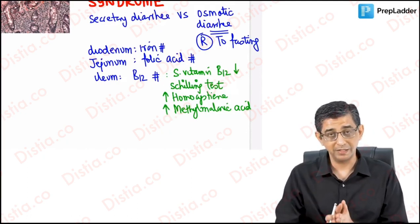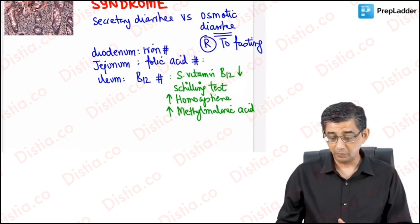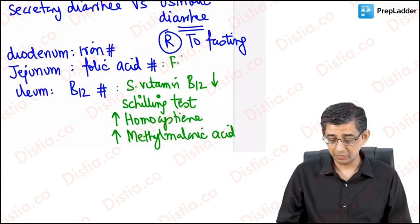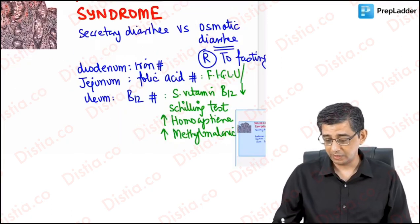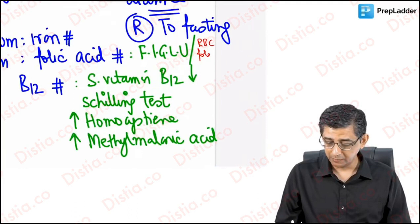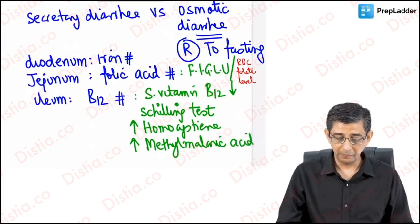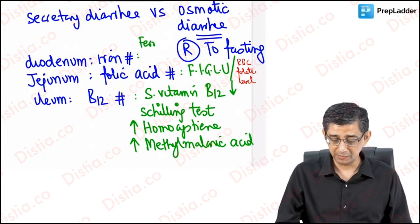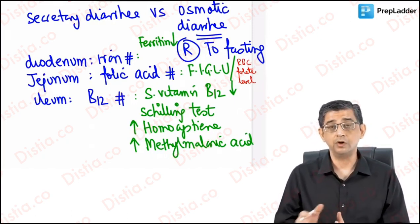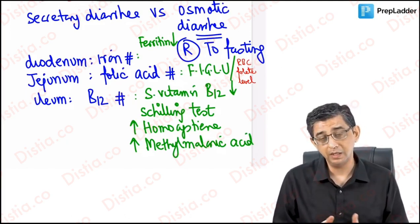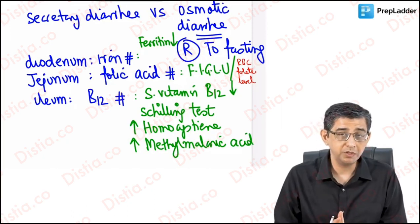To summarize ileal damage markers: B12 levels are reduced, serum homocysteine is elevated, and MMA values are elevated. For folic acid deficiency, the standard test is RBC folate levels, though the examiner may use the FIGLU (formiminoglutamic acid) test instead. For iron malabsorption, serum ferritin will be significantly reduced.